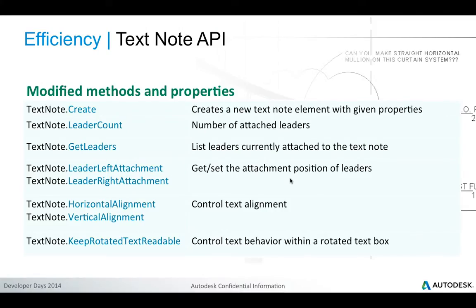The text note API has been renovated. This is another example of more direct API access to the built-in Revit elements through an automated API generation system. Whenever we see a static create method on a class instead of the new text note creation method on the creation document, that is an indication that this API has been completely renovated.